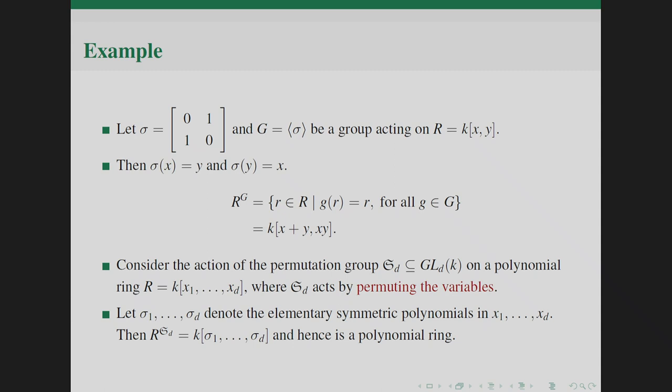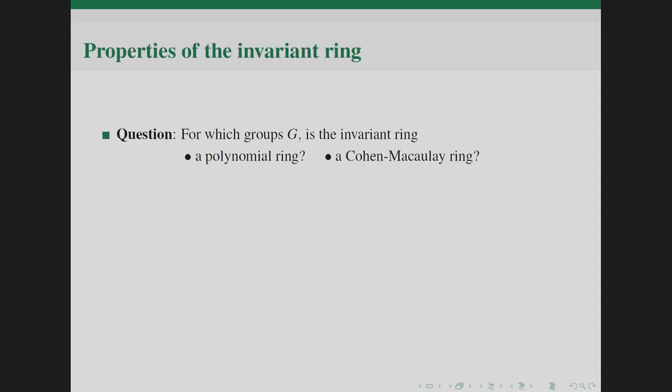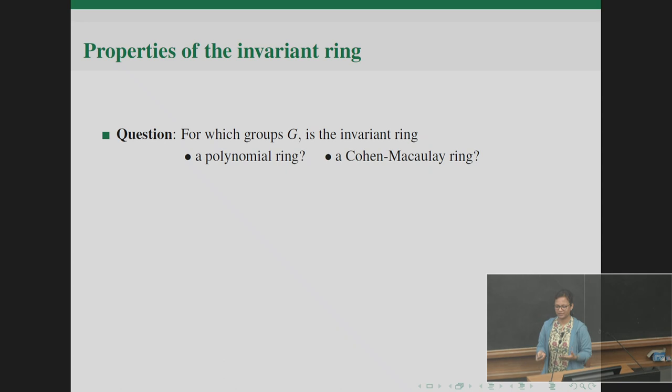If the invariant ring is not a polynomial ring, the question is what other special properties can we look for. In particular, the next obvious characterization I would look at is whether the invariant ring is Cohen-Macaulay or not. This is one of the basic questions in invariant theory — can we have some bridge between properties of the group and properties of the invariant ring?